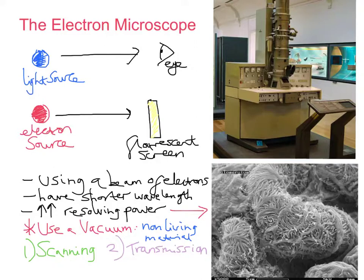Now let's talk about the transmission electron microscope. The transmission electron microscope passes electrons through a very thin section of the specimen on the way to the fluorescent screen.